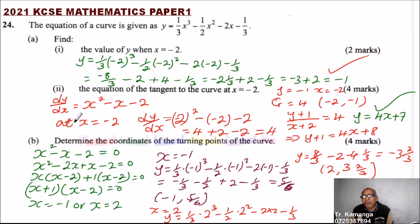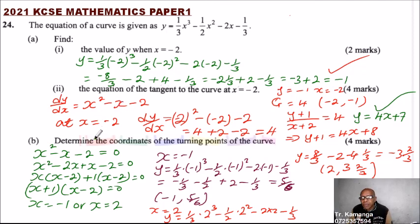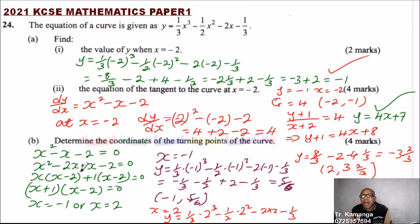Something to note: this topic was done in Form 4 in differentiation. You are being tested whether you understand the gradient function — you get it by differentiating, so you should be comfortable differentiating a function. You are also being tested whether you understand the relationship between the gradient and the gradient function. In Part B you are tested whether you understand the turning points of a curve and how to get them — that is the topic known as differentiation.